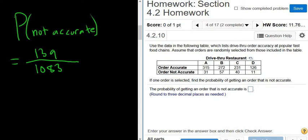The probability of getting an order that is not accurate is the number of ways to get an order that is not accurate divided by the number of ways to get an order. To figure out the number of ways to get an order that is not accurate, you add up the bottom row of this table. Those are all the orders that are not accurate. To figure out the number of ways to get an order, you have to add up all the numbers. That's the total. Remember, the total always goes on the bottom.